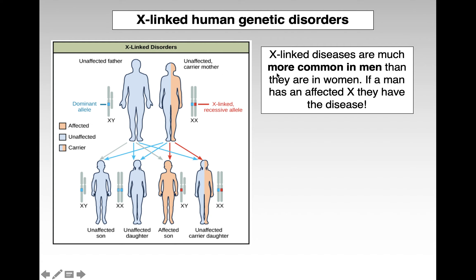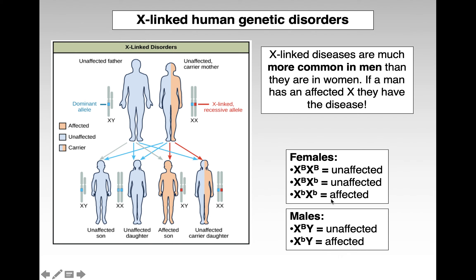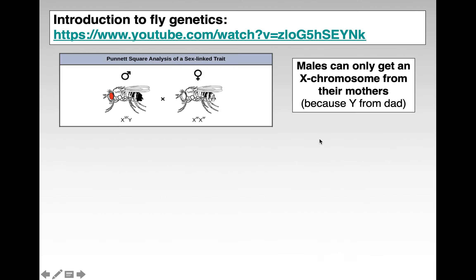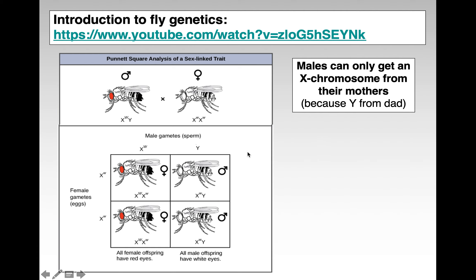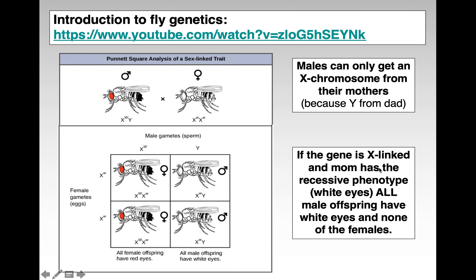There are lots of human genetic disorders caused by X-linked genes, and these are more common in men. We often use fruit flies or Drosophila to look at X-linked traits and genetics in general because they mate really quickly, have lots of offspring, and you can observe visual traits. Males can only get the X chromosome from their mothers, since they got the Y from the dad. If the gene is X-linked and the mom has a recessive phenotype, the male will have that trait.